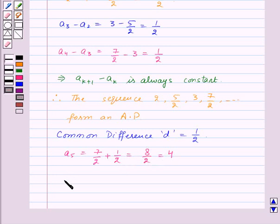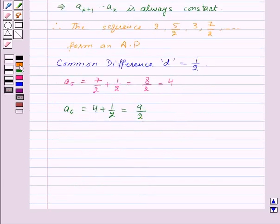Next term, A6 will be equal to A5, that is 4 plus 1 by 2 which will be equal to 9 by 2. Now, A7 will be equal to A6, that is 9 by 2 plus 1 by 2 which will be equal to 10 by 2, that is 5.